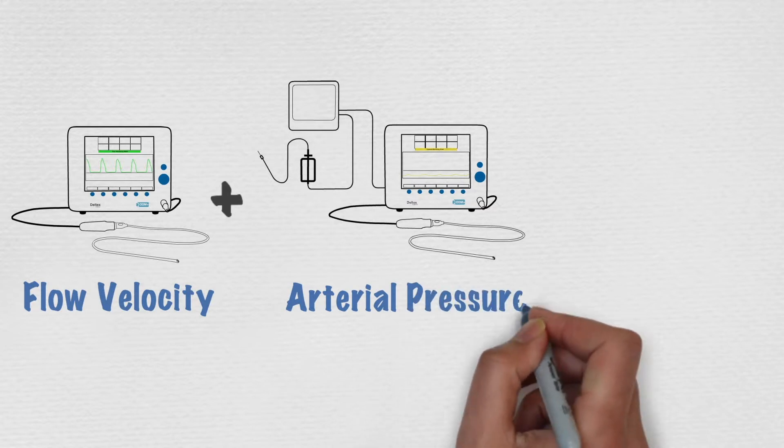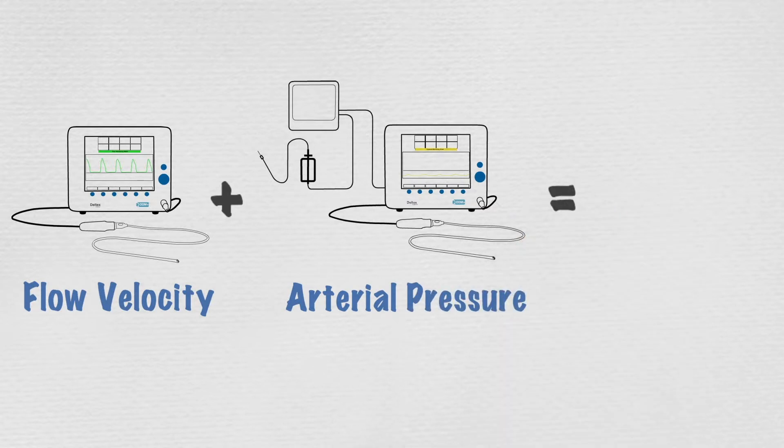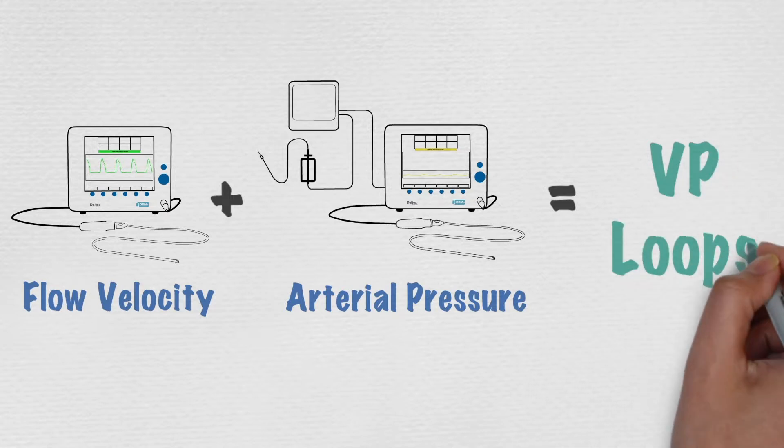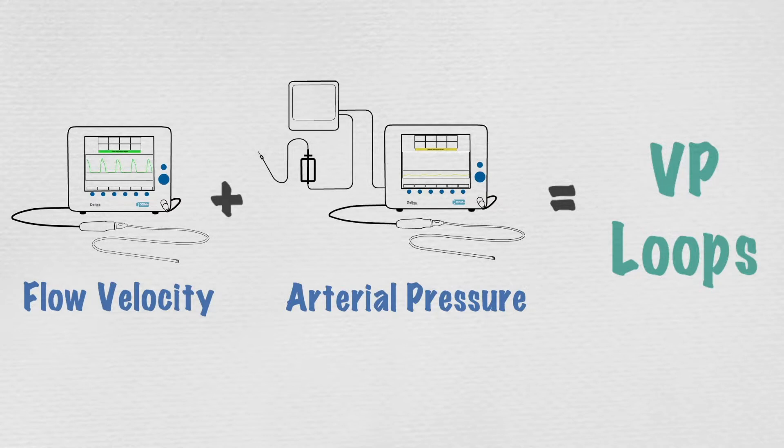VP loops provide a biomarker for cardiovascular risk and haemodynamic control, and are possible because the ODM+ measures both aortic flow velocity and arterial blood pressure directly. This concept was developed by clinicians at Lari-Posier Hospital in Paris.